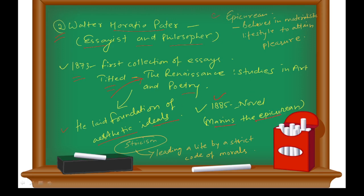What is Epicurean? Let me tell you first about Stoic. A stoic person or stoicism means a person leading a life by a strict code of morals. If you have a strict code of morals in your life, you are a stoic person. Epicurean is opposite to stoicism. He believes in a materialistic life, trying to achieve pleasure. His focus point and goal is pleasure through a materialistic lifestyle.